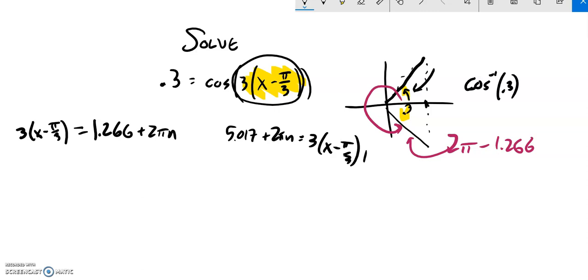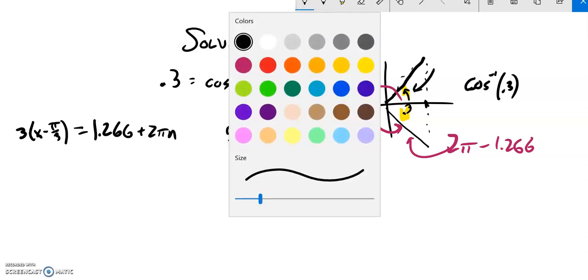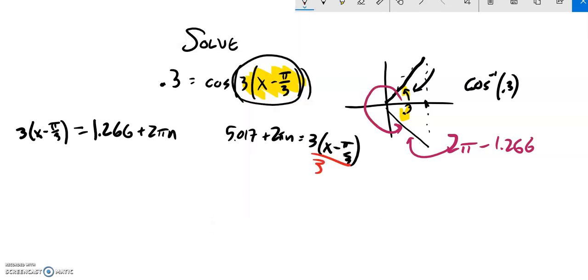First thing I will do then is divide both sides by 3. If I do that over here I've got x minus π/3. 1.266 divided by 3, do that on my calculator, 0.422. And notice it's plus 2π divided by 3 times n, because I shortened up that period.